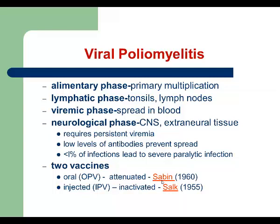The second vaccine is the injected Salk vaccine, which is an inactivated vaccine using dead poliovirus. Its advantage is that there are no side effects. The disadvantage is that it forms weak and not long-lasting immunity. Even with booster shots, the immunity is not as strong as that produced by the attenuated Sabin vaccine.